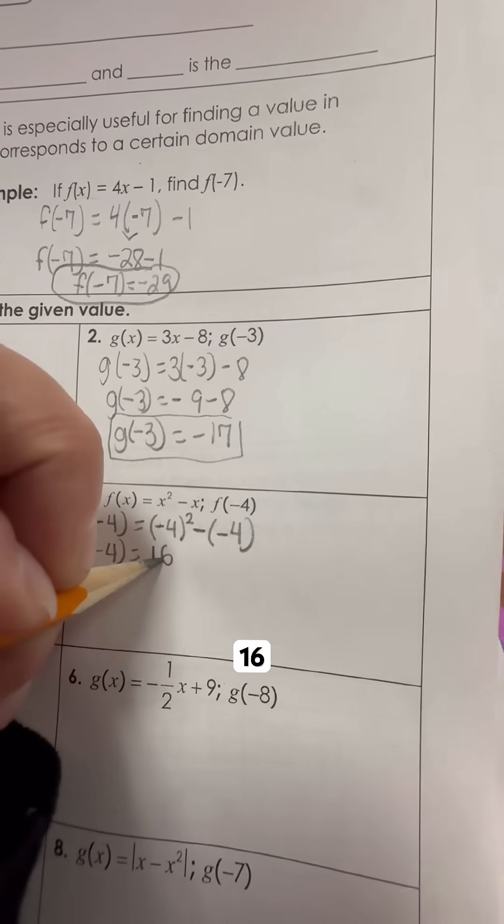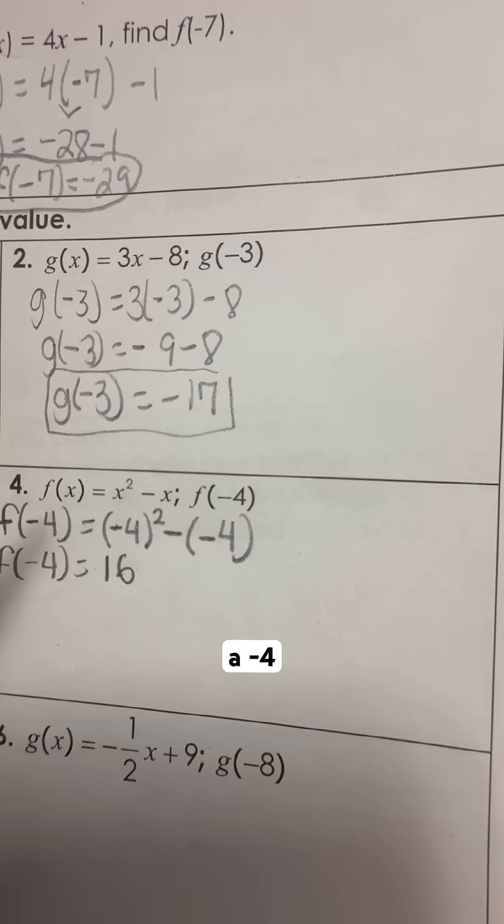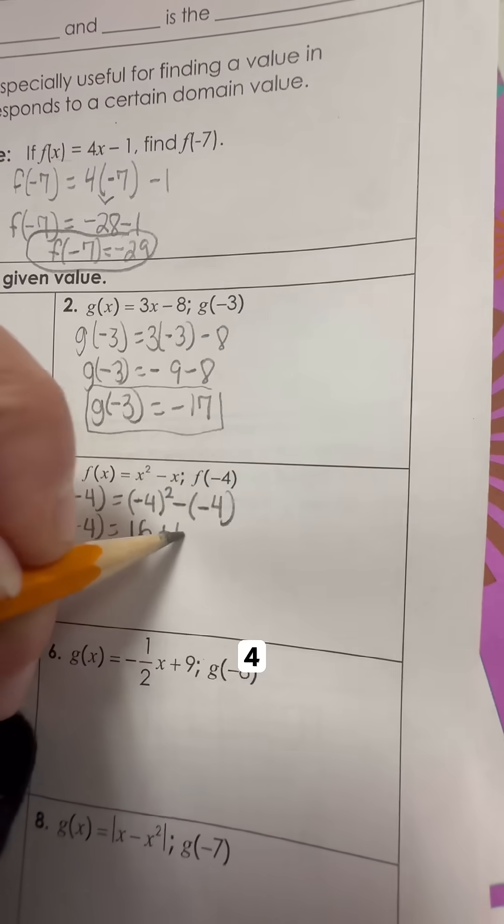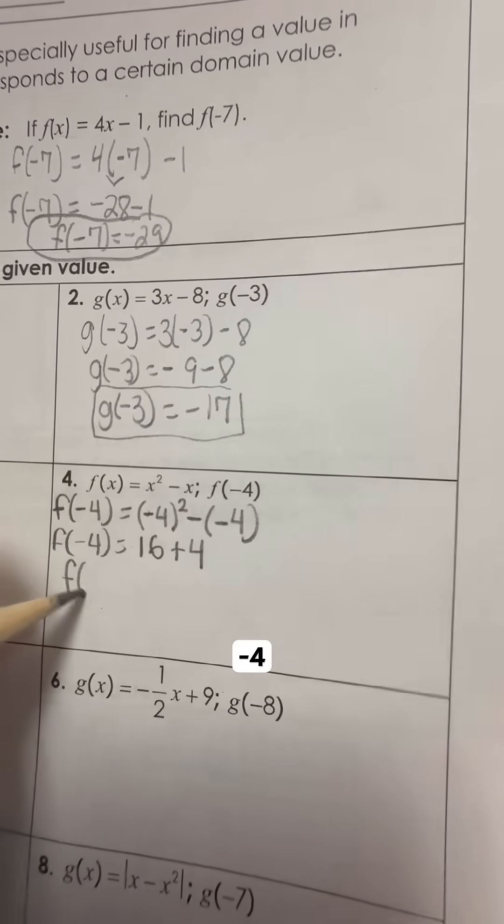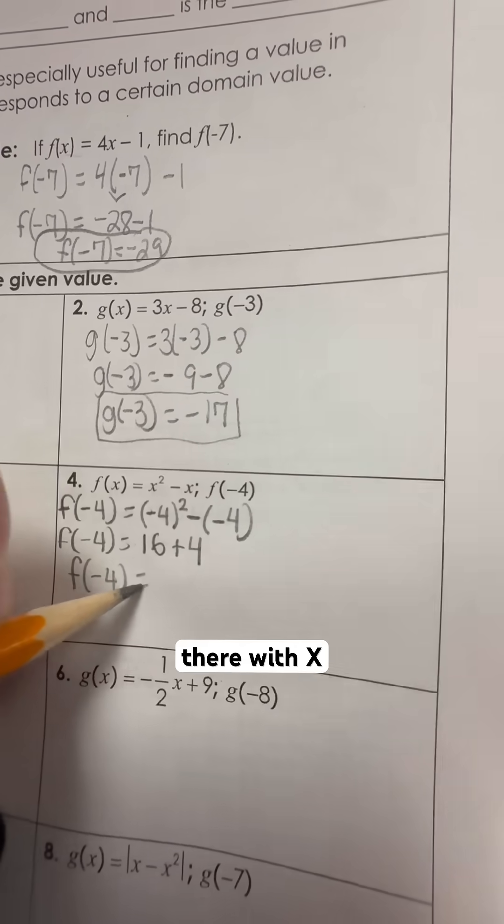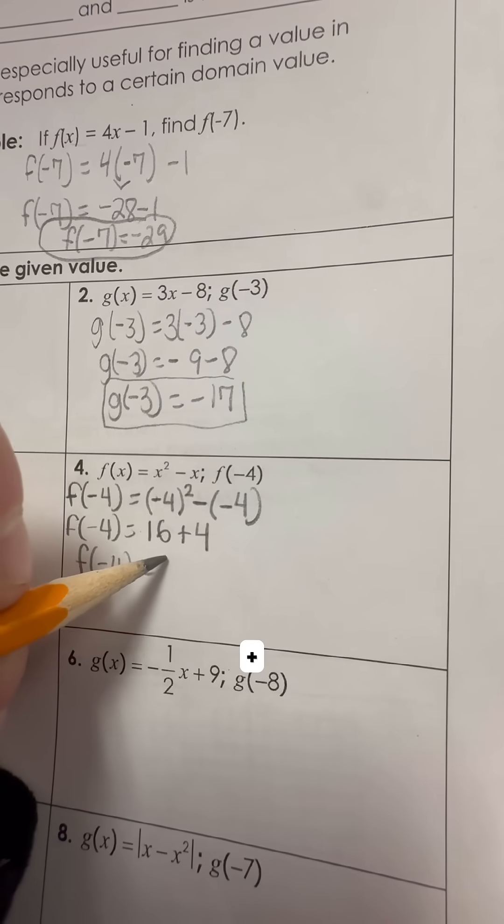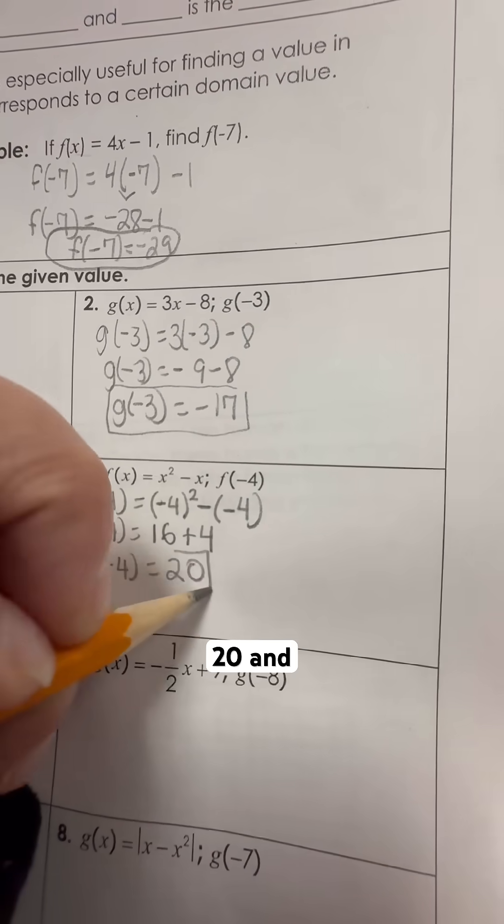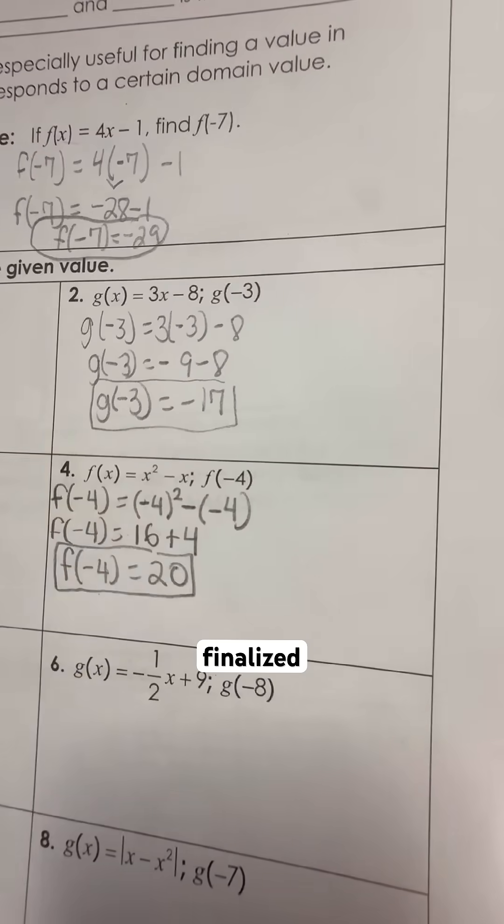Negative 4 times negative 4 is a positive 16, and then this is minus a negative 4, which is actually plus 4. So negative 4 being replaced there with x is actually going to give me 16 plus 4, which is 20.